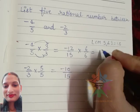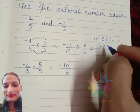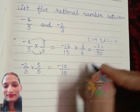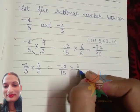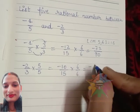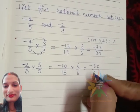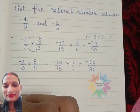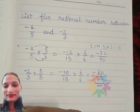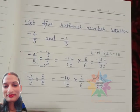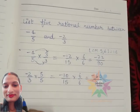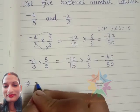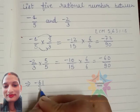We get -72/90 and the second one is -60/90. In the next step, we write between -4/5 and -2/3, the first number is -61/90.